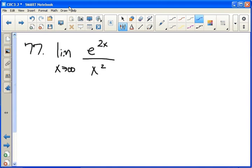We first need to make sure that this is an indeterminate form. We have the limit as x approaches infinity. E to the 2x goes to infinity as x goes to infinity, and x squared also goes to infinity as x goes to infinity.